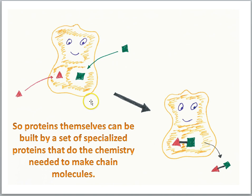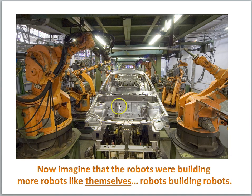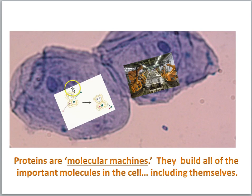Proteins are star players in the life of the cell. The proteins themselves can be built by a set of specialized proteins that do the chemistry needed to make chain molecules. Proteins can assist in the construction of other proteins, including proteins like themselves. Consider a factory — an auto factory — where robots are designed to do operations on a car: a machine building a machine. Now imagine if those robots were not building cars but were building robots like themselves — robots building robots. That's the idea within the cell: teams of proteins are molecular machines that build all of the important molecules in the cell, including themselves.